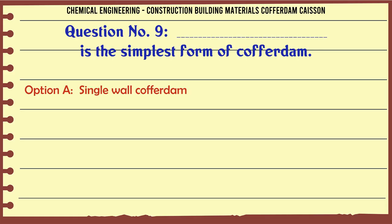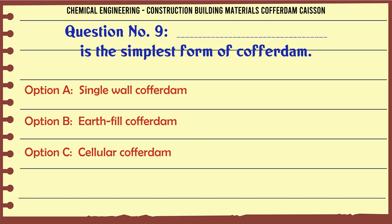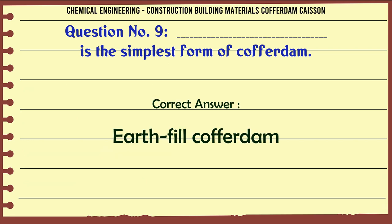Which is the simplest form of cofferdam? A. Single wall cofferdam. B. Earth fill cofferdam. C. Cellular cofferdam. D. Rock fill cofferdam. The correct answer is: Earth fill cofferdam.